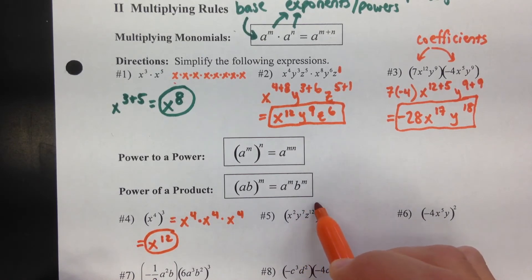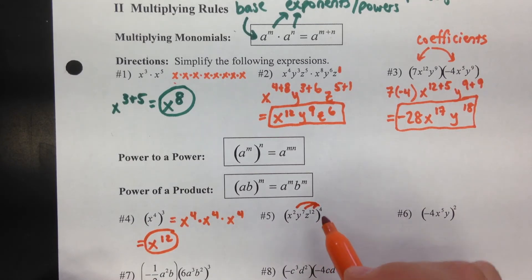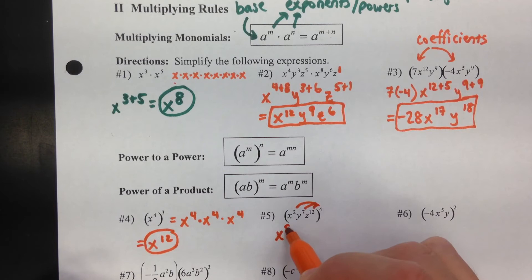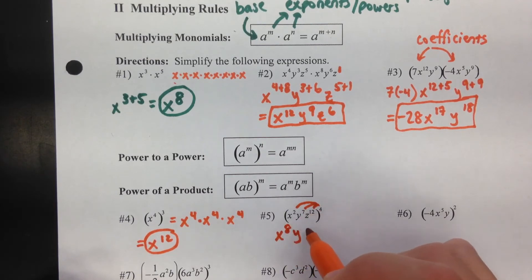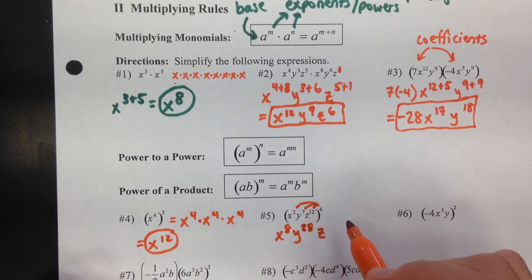For example 5, if you have more than one variable inside the parentheses, everything inside gets raised to the outside exponent — it's almost like distributing the exponent. So it becomes x to the 2 times 4 which is 8, y to the 7 times 4 which is 28, and z to the 12 times 4 which is 48.